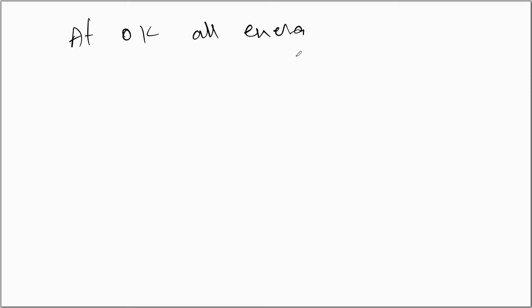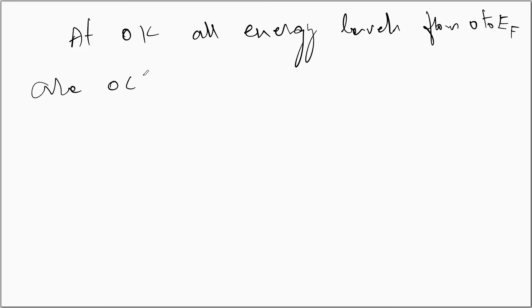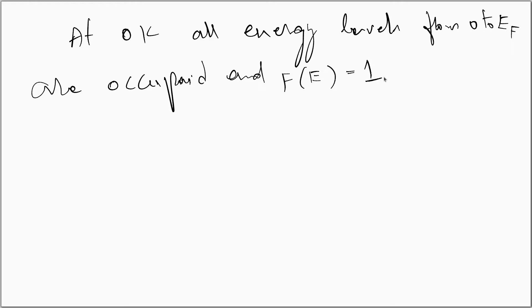At 0 Kelvin, all energy levels from 0 to E_F are occupied and F(E) = 1, meaning the probability of finding the electron in those energy levels is equal to 1.